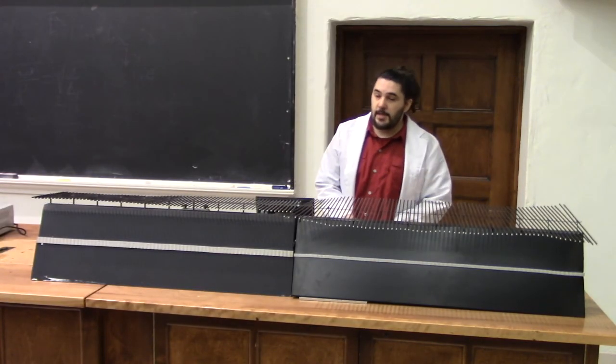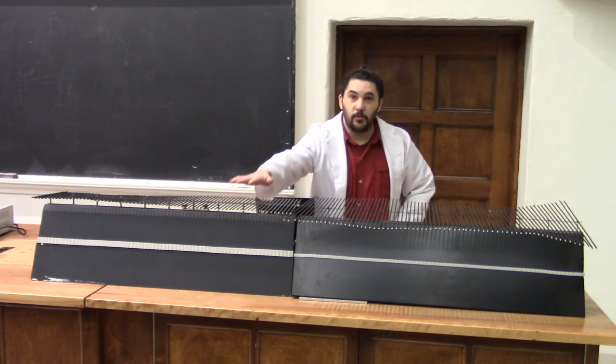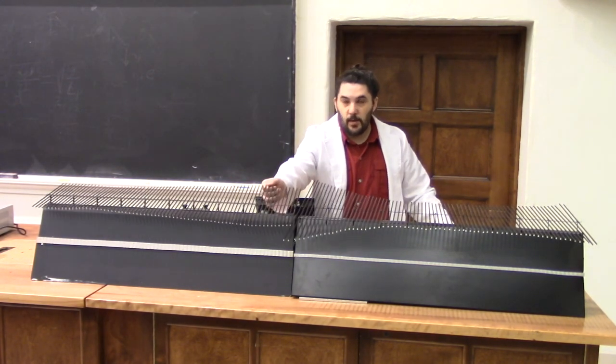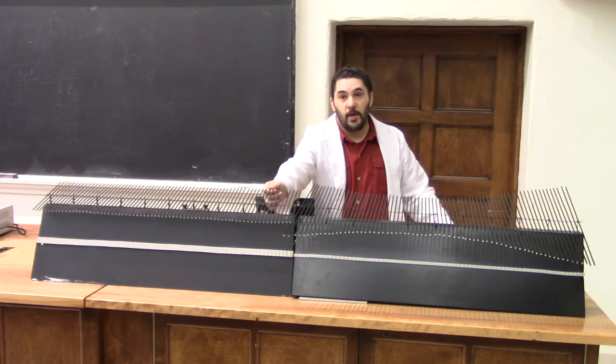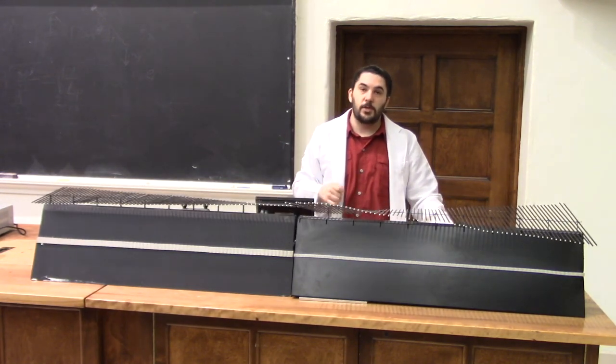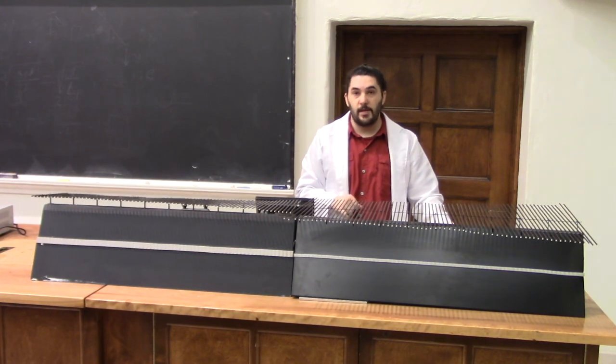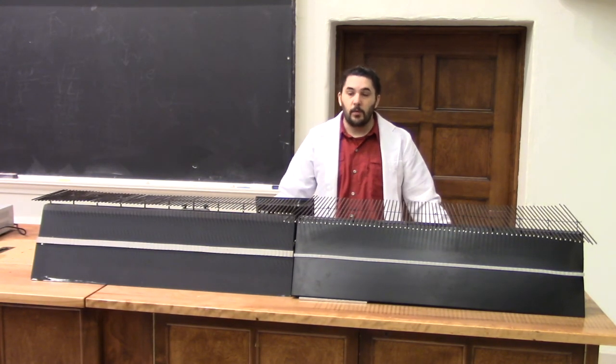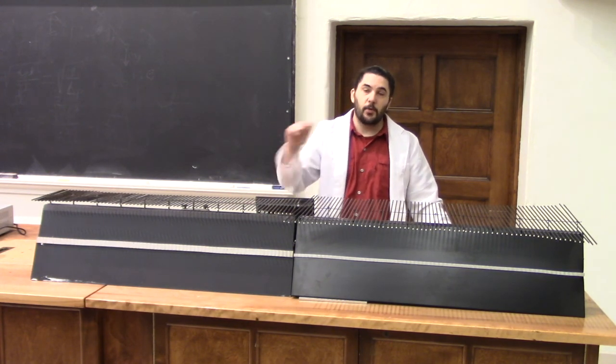First off, we can clearly see that waves travel much faster through this side than this side. This is, of course, because these rods, having a smaller radius, have a lower moment of inertia, so it takes less torque to twist them. And we see that there's an element of transmission and reflection regardless of which side a wave hits the boundary from.